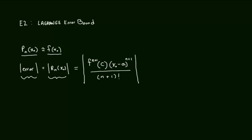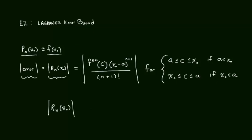This is going to be true for some value of c. We don't know what the value of c is, but we know that it is true for some value of c. The criteria is that c has to be between the center a and the value of x0. That notation describes that some number c is between a and x0. Since we do not know this value of c, it's not that helpful unless we can figure out the maximum value.